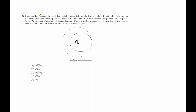This is problem number 25, the last problem of this Physics Olympiad FP goes MA test. A spaceship of negligible mass is in elliptical orbit about planet Bob. The minimum distance between the spaceship and the planet is r, the maximum distance is 2r. At the point of maximum distance, spaceman Fred is traveling at speed v₀, then fires his thrusters to enter the larger circular orbit of radius 2r.